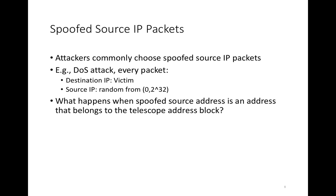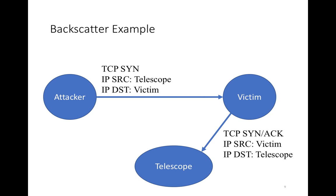What happens when a spoofed source address is an address that belongs to the telescope address block? Here's an example: the attacker sends a TCP SYN where the IP destination is the victim and the IP source happens to be an address within the darknet's network prefix. That SYN packet travels across the network, reaches the victim, and the victim's TCP stack does exactly what it's supposed to do — it sends a TCP SYNACK trying to complete the three-way handshake, with source being the victim and destination being the telescope. This shows how TCP SYNACKs might arrive at the telescope.